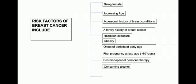The next factor is consuming alcohol. Drinking alcohol increases the risk of developing breast cancer. The last factor we'll discuss here is diet. The Women's Health Initiative trial suggested that a diet very low in fat may reduce the risk of developing breast cancer.